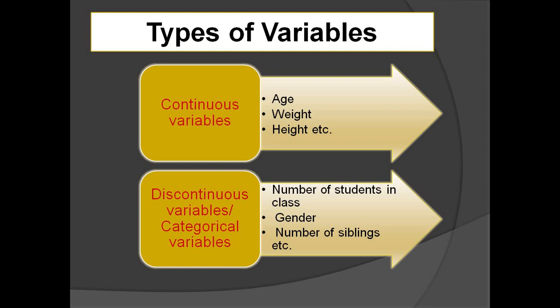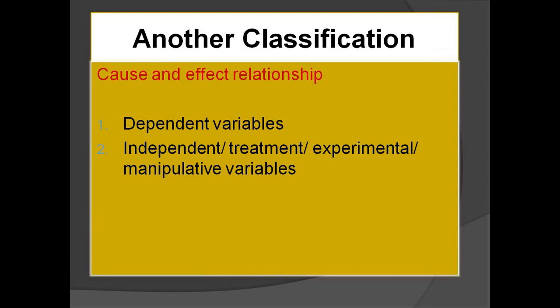We have two broad types of variables: continuous variables and discontinuous variables. Examples of continuous variables are age, weight, and height. Age can be 20 years, or 20 years and one day; weight can be 50 kg or 50.1 kg. Examples of discontinuous variables are number of students in a class, gender, and number of siblings. We can have 2 or 3 siblings but not 2.5 siblings; similarly, we can have 20 or 21 students but not 20.5 students.